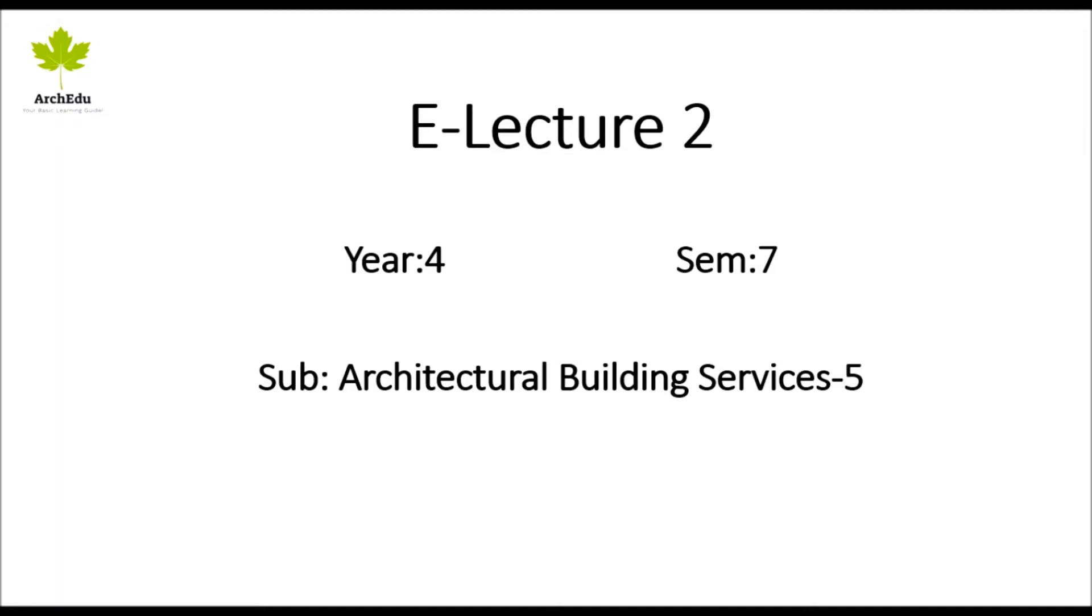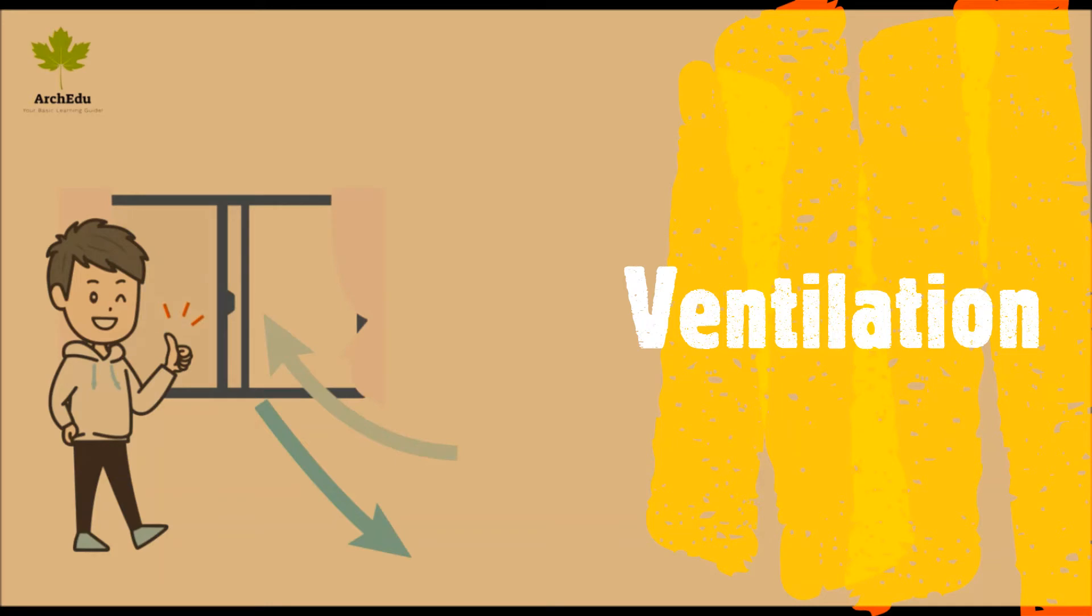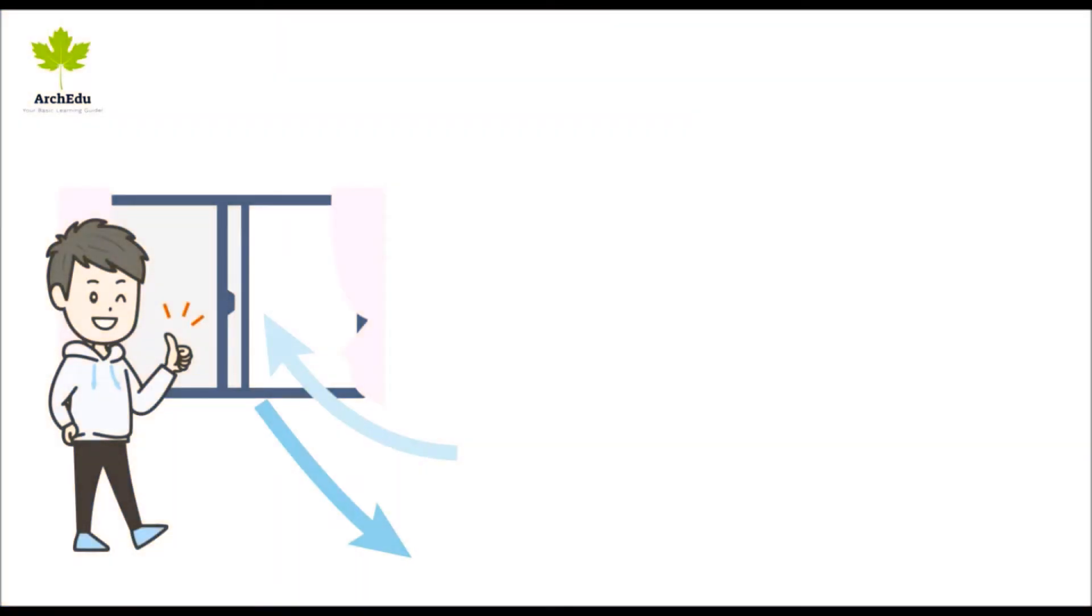E-lecture 2, Year 4, Semester 7, Subject: Architectural Building Services 5. Topic: Refrigeration cycle, air conditioning basics and parts. Before starting air conditioning, I would like to discuss ventilation. As we know, ventilation in buildings can be achieved by two means: by natural means or by mechanical means.